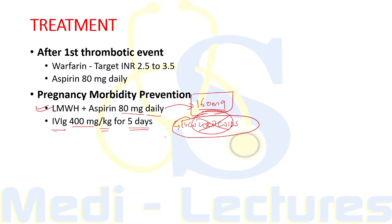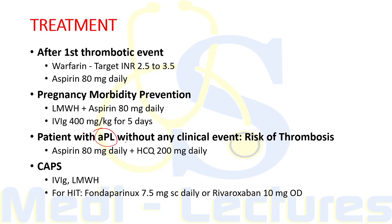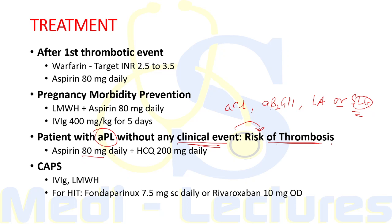If a patient presents with antiphospholipid antibodies — anti-cardiolipin, anti-beta-2 glycoprotein 1, or lupus anticoagulant — or has SLE with these antibodies but without any clinical event yet, there is still an increased risk of thrombosis. These patients should be kept on aspirin 80 mg daily with hydroxychloroquine 200 mg daily for prevention of thrombotic events.